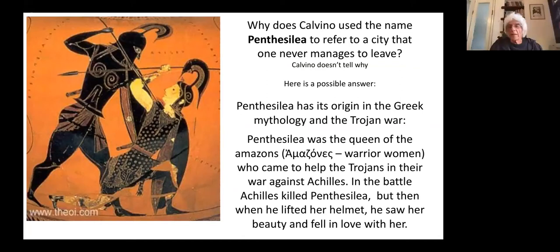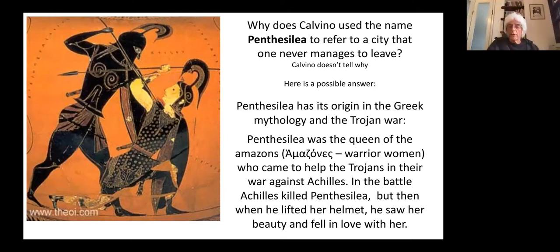Pentacillia was, according to the story, the queen of the Amazons — warrior women who came to help the Trojans in the war against the Greeks, headed by Achilles. In the battle, Achilles killed Pentacillia, but then when he lifted her helmet, he saw her beauty and fell in love with her.